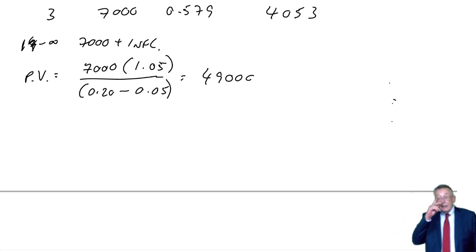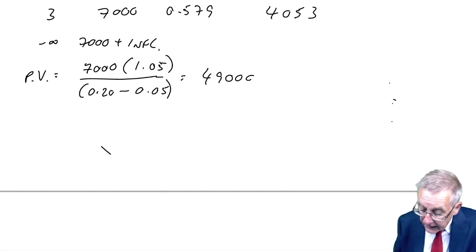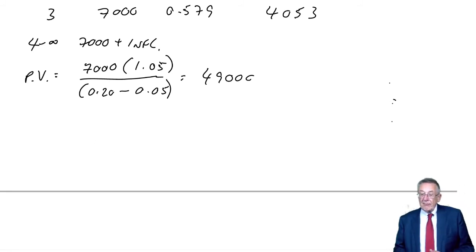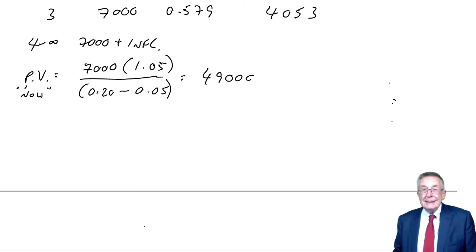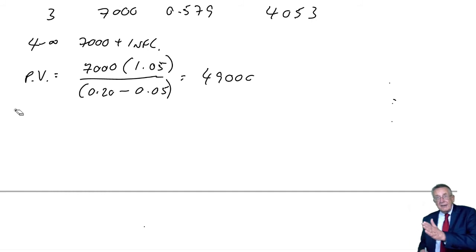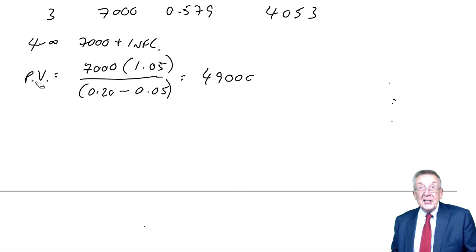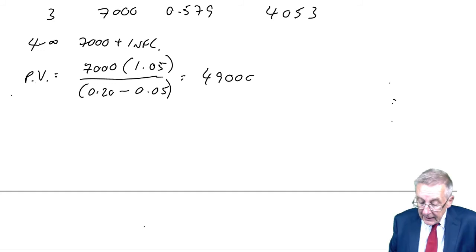Had it been 1 to infinity, end of story. The problem is it is 7,000 inflating in perpetuity, but instead of starting in one year's time, it starts in four years' time. Now, had it been 1 to infinity, 49,000 would be the present value now. But it isn't 1 to infinity — it's 4 to infinity, starting three years later, time 4 instead of time 1. So the present value we get will be three years later as well. Instead of being the present value now at time 0, it'll be the present value at time 3.